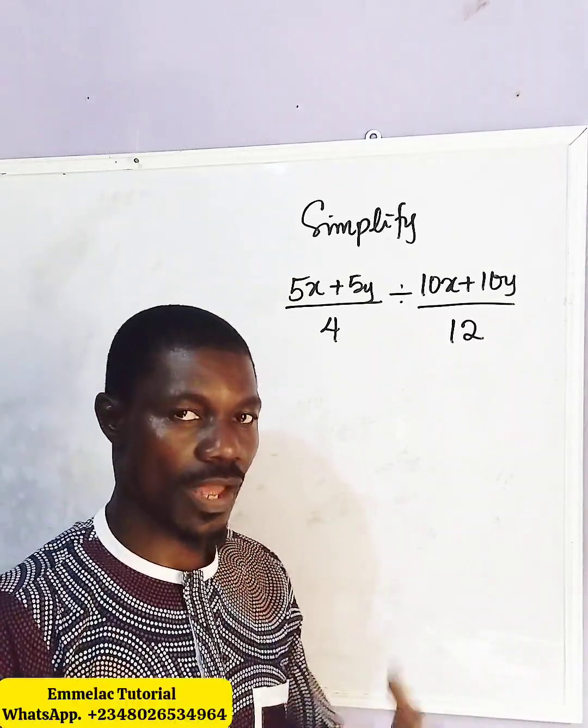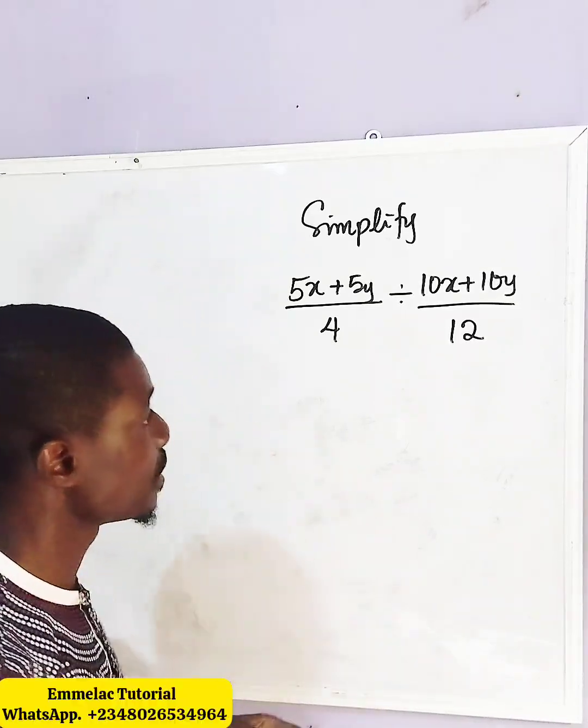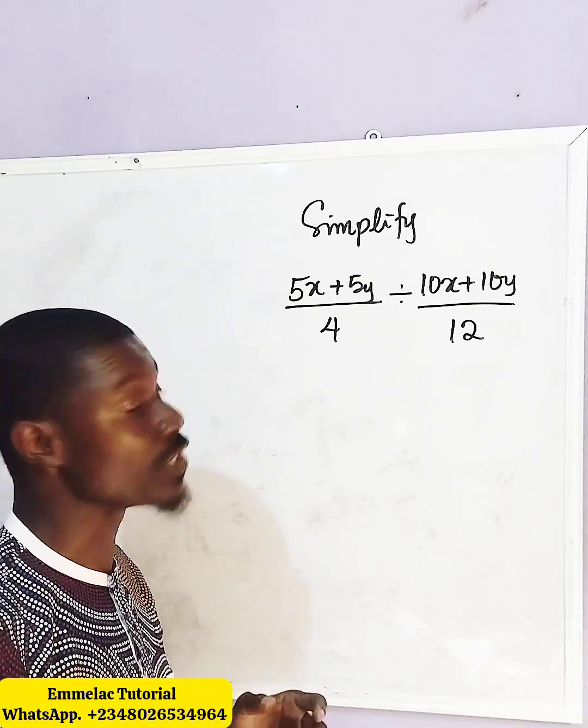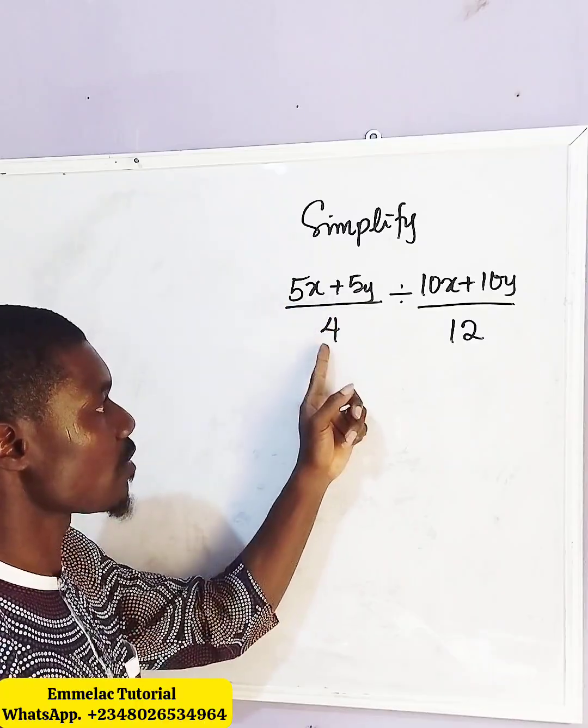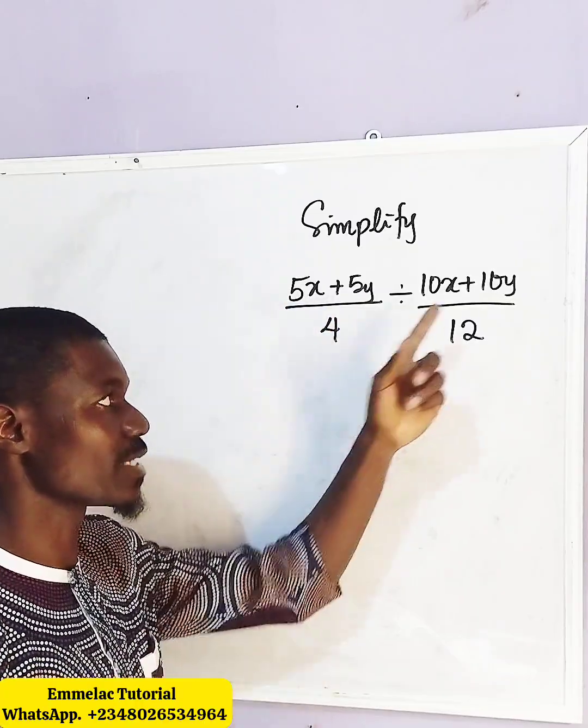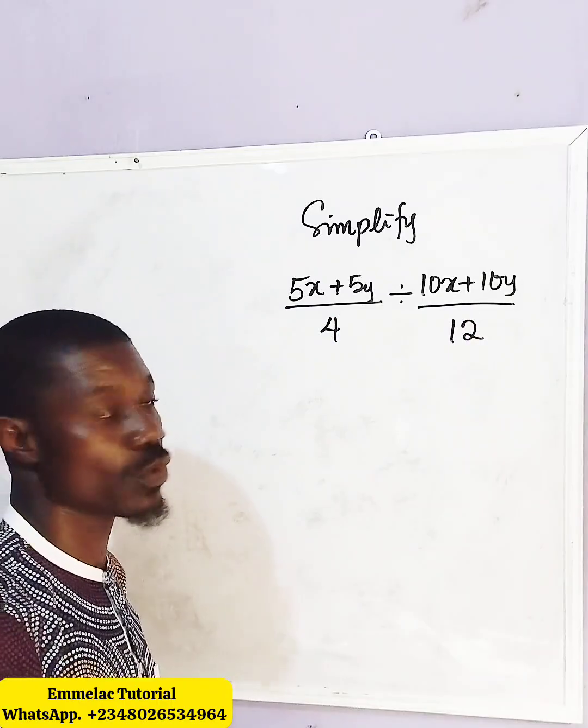Welcome to a Melancholine tutorial. How do we simplify this fraction? Here we have 5x plus 5y all over 4 divided by 10x plus 10y all over 12.